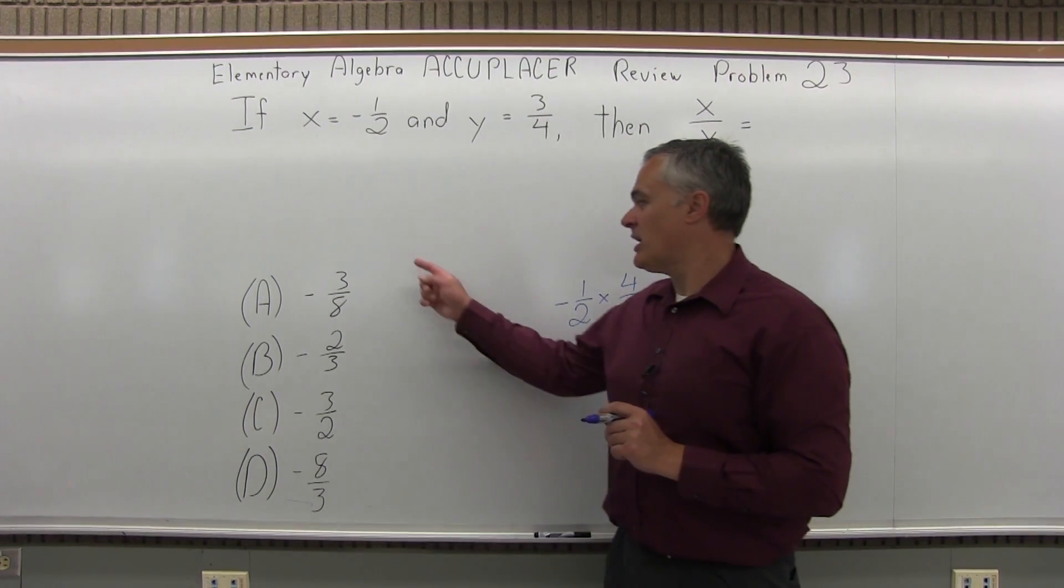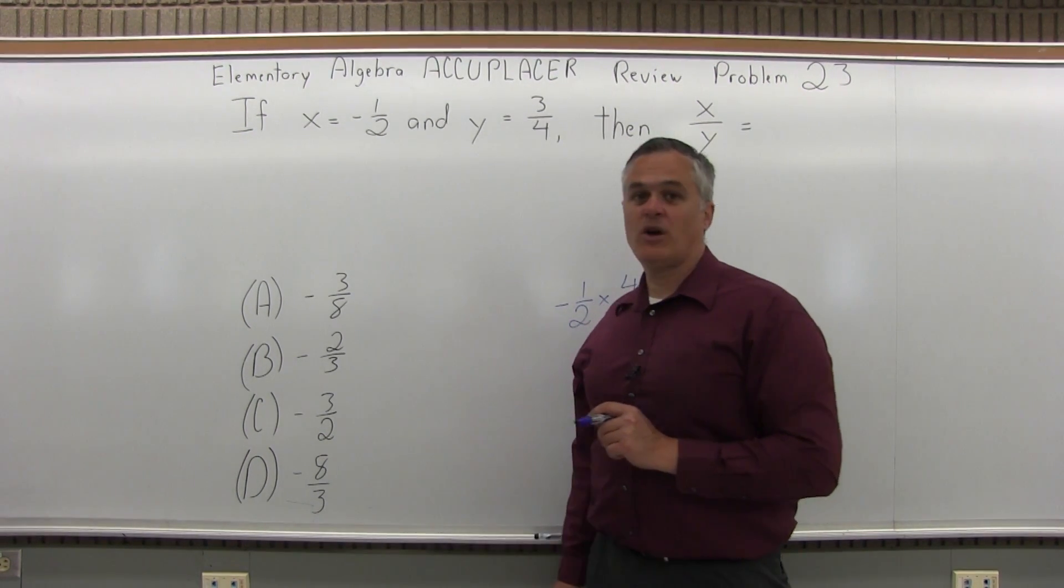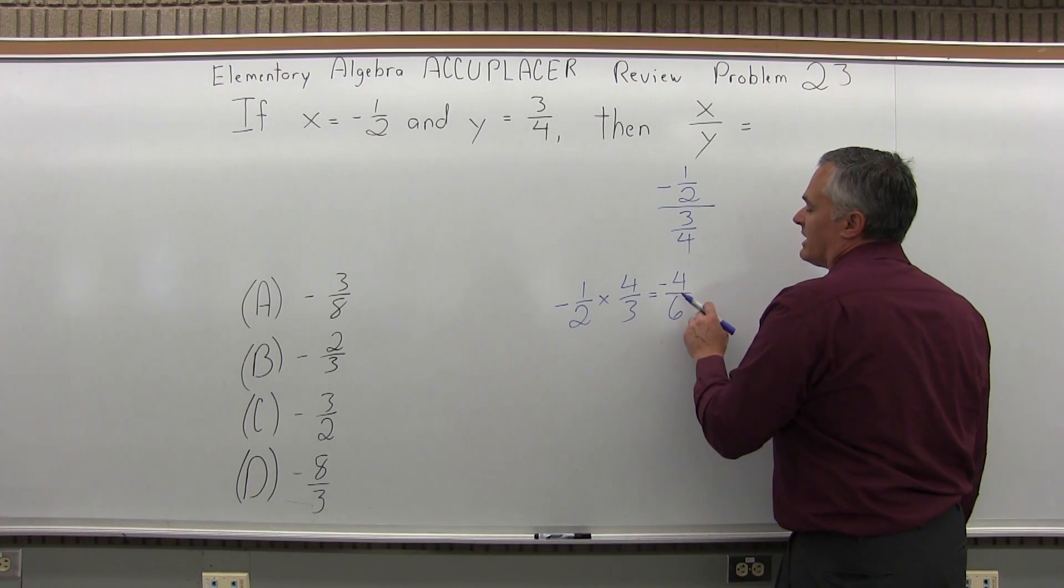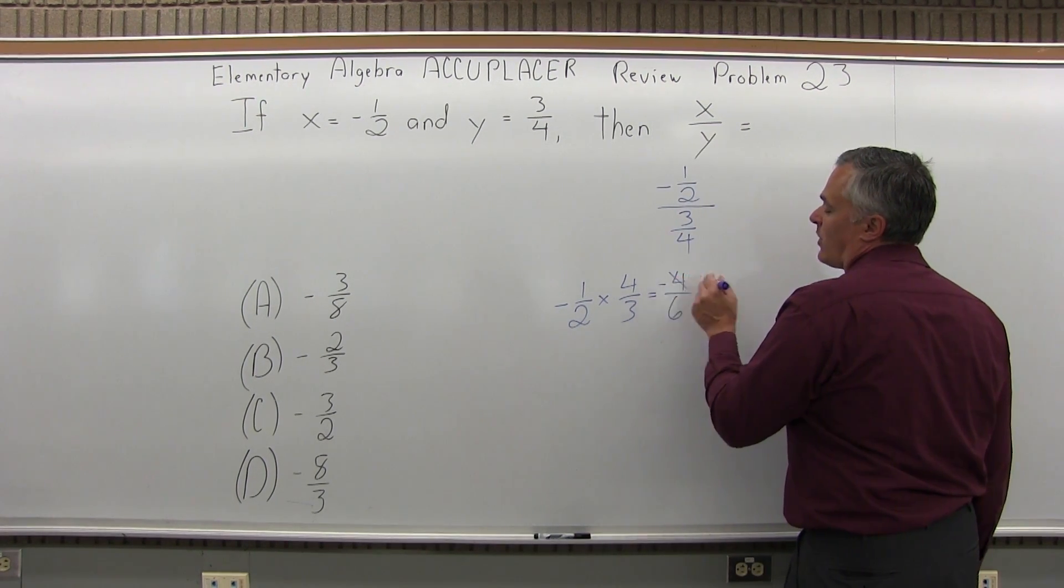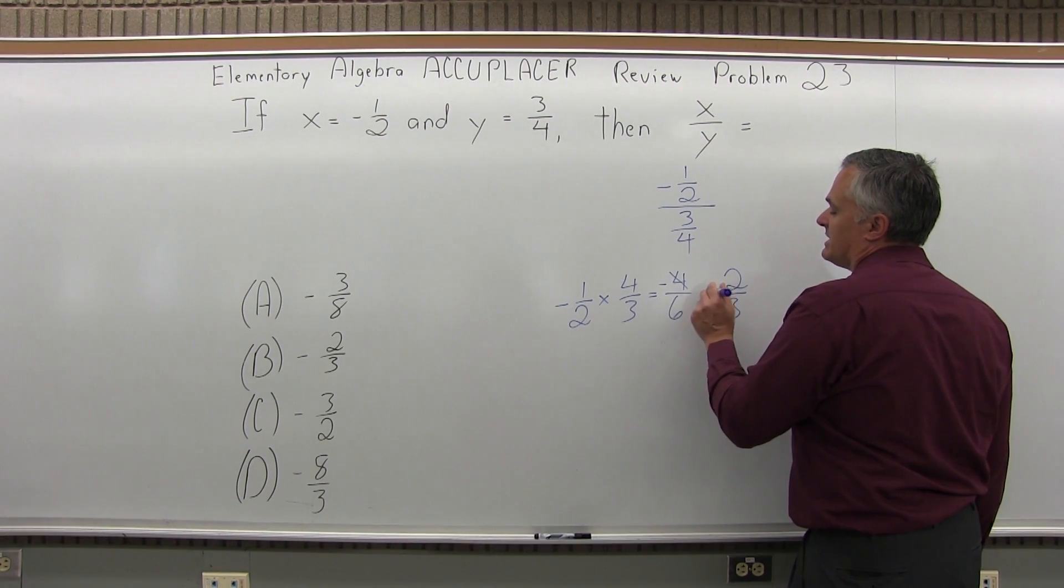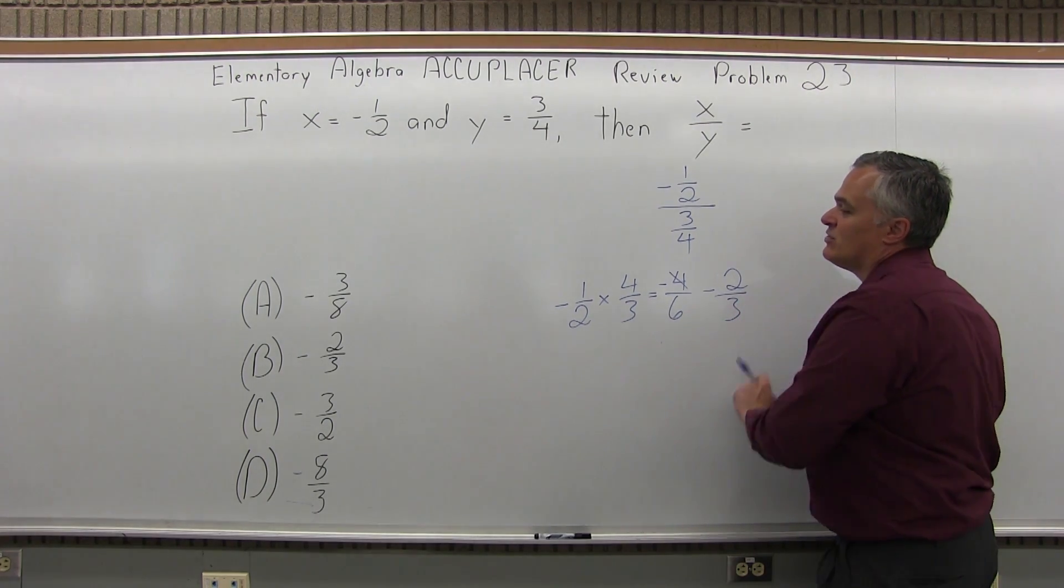which is not one of my options, but I can reduce it. These are both even, so I can cut them in half. Half of four is two. Half of six is three. Again, remember, it's negative. So I have negative two-thirds,